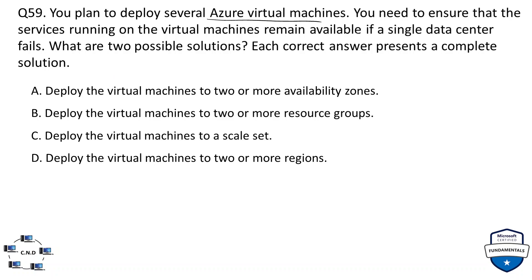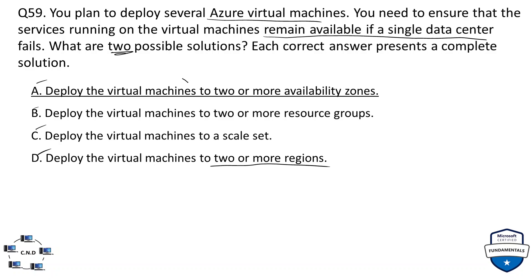Question 59: you plan to deploy several Azure VMs and need to ensure that services remain available if a single data center fails. What are two possible solutions? Options: A) deploy VMs to two or more availability zones, B) deploy VMs to two or more resource groups, C) deploy VMs to a scale set, or D) deploy VMs to two or more regions. The correct options are A and D — availability zones and regions.